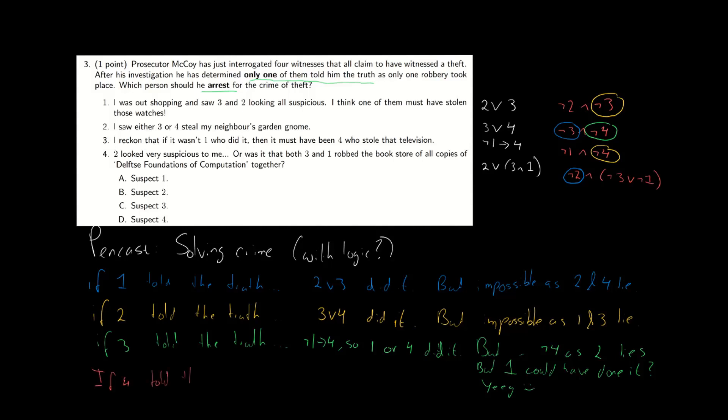But well, for completeness, let's take a look at what the four witness states. So if four is telling the truth, then either two did it or three and one did it together. Well, the last part doesn't really make sense because we're looking for a single suspect. But sure, let's try anyway. So two couldn't have done it because the lie of answer one makes that impossible. And well, one couldn't have done it and three couldn't have done it either because of the lies of number two and three that both exclude three and one respectively.